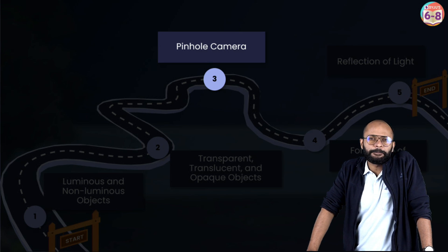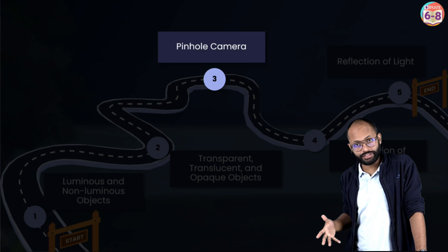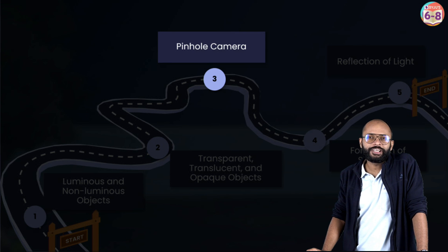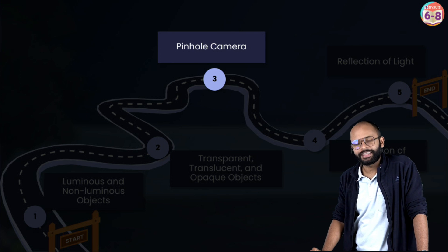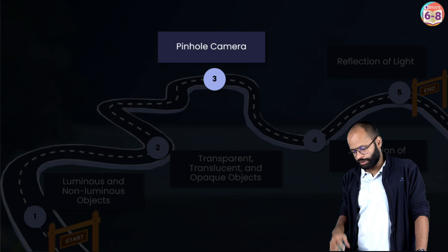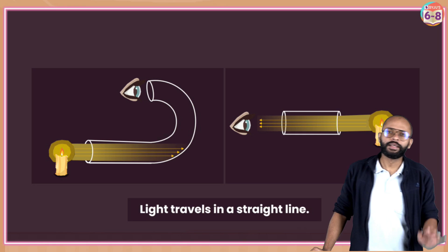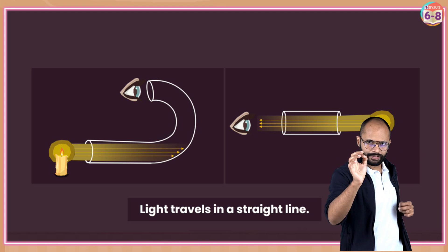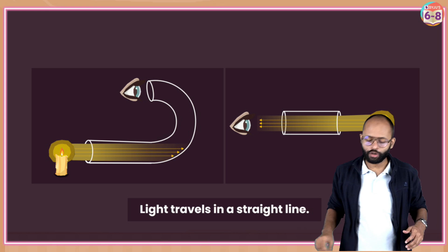This is the most interesting topic that students find difficult - I don't know why. Those who experience it, they enjoy it. First thing: pinhole camera. It works on what? A very common question is - state the principle behind the working of a pinhole camera. The principle is that light travels in straight lines. In more technical words, we say rectilinear propagation of light. This is a proof, and it's important.